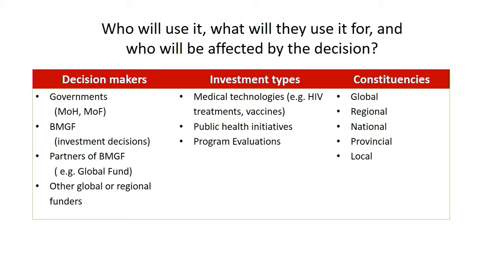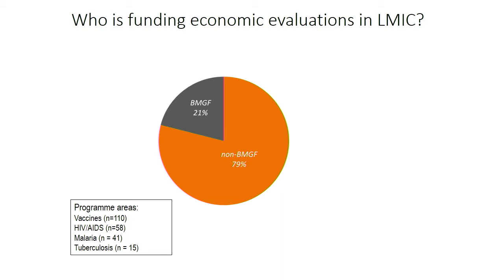The constituencies were the critical piece. On one level we wanted a global audience — economic evaluations that inform decisions about what should be done globally. We also wanted things to be applicable nationally, regionally, provincially, even at the local level. So that was quite a challenge.